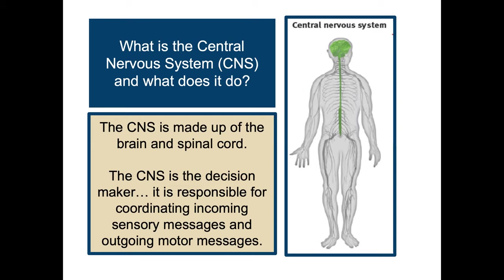The other part of the CNS, the spinal cord, is a two-way information highway connecting the peripheral nervous system and the brain. Ascending neural fibers send up sensory information; descending neural fibers send back motor control information. The neural pathways that govern our reflexes are autonomic responses to stimuli — that is the spinal cord's work.